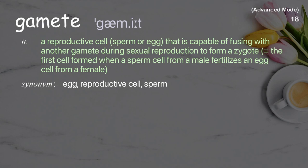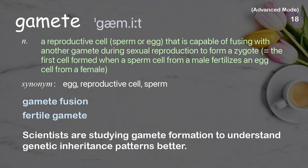Gamete: A reproductive cell — sperm or egg — that is capable of fusing with another gamete during sexual reproduction to form a zygote, the first cell formed when a sperm cell from a male fertilizes an egg cell from a female. Examples: gamete fusion, fertile gamete. Scientists are studying gamete formation to understand genetic inheritance patterns better.